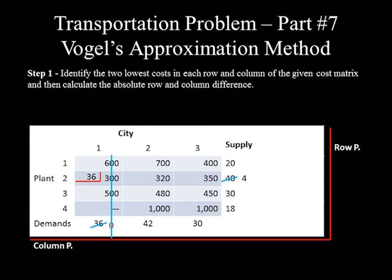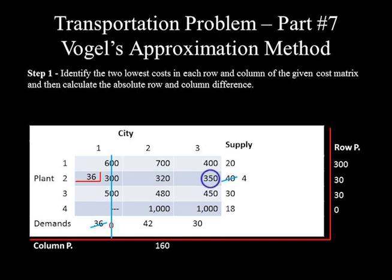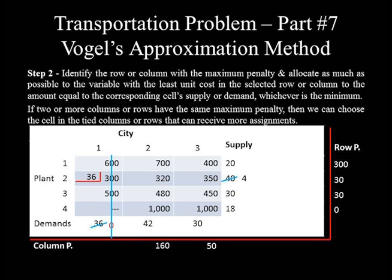With only two undeleted columns remaining, row penalties are simply the difference between the unit costs of the respective remaining columns. Row 1 penalty = 700 − 400 = 300. Row 2 penalty = 350 − 320 = 30. Row 3 penalty = 480 − 450 = 30. Row 4 penalty = 1,000 − 1,000 = 0. Column 2 penalty = 480 − 320 = 160. Column 3 penalty = 400 − 350 = 50. The maximum penalty is 300, so row 1 is the next row to receive allocations.